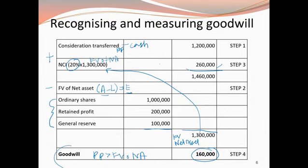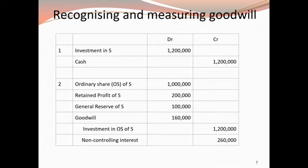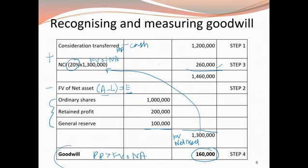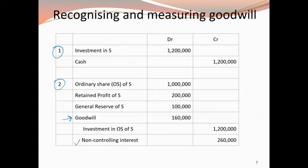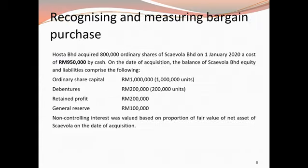So goodwill is 160,000 because the consideration transferred is more than the fair value of net assets. Now let's look at the journal entries. From the four-step calculation, you transfer the amounts into the general journal entries: first, recognizing the investment in the subsidiary; then recording the recognition of goodwill and also the non-controlling interest.